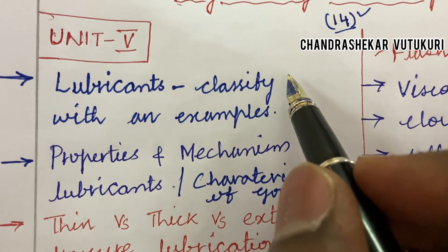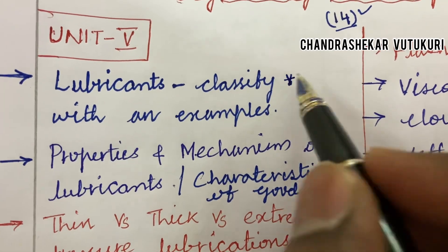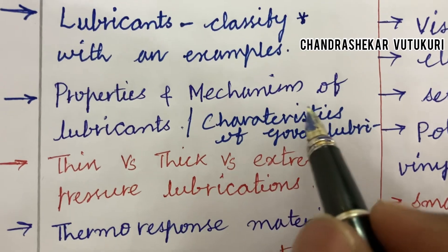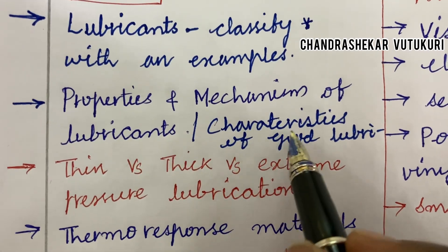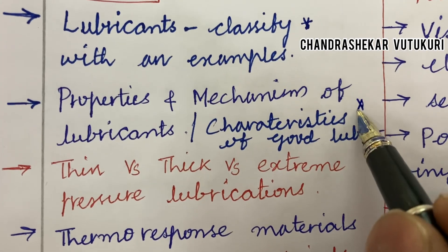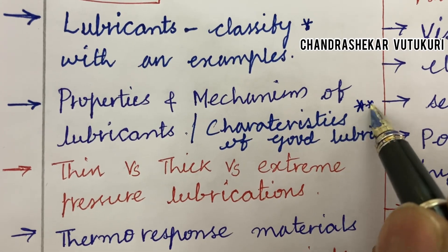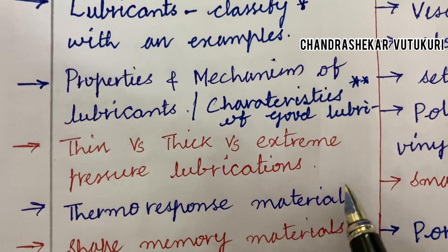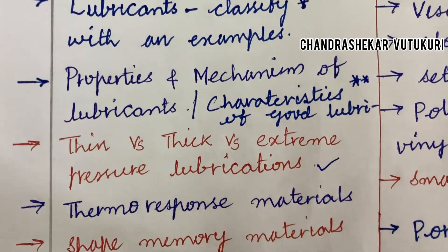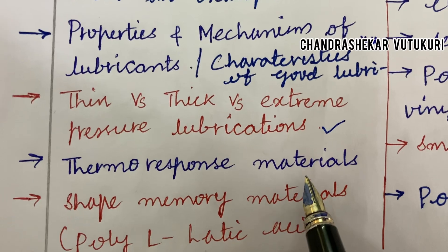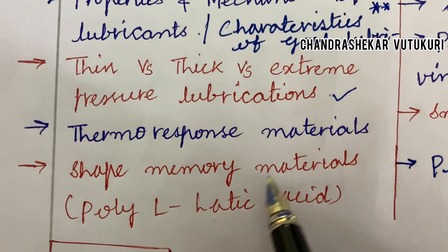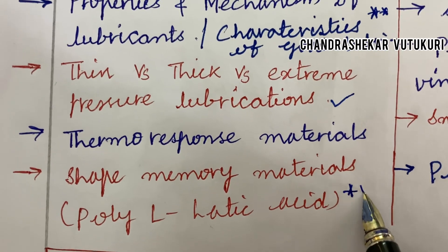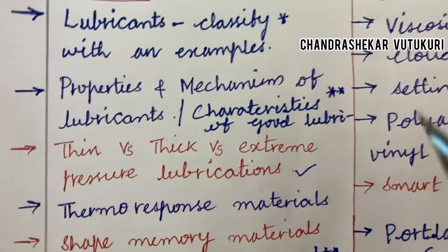Lubricants and their classifications with examples is said to be a topmost question. The properties and mechanism of lubricants, and the characteristics of good lubricants, may also be one of the highlighted questions. Thin versus thick versus extreme pressure lubrications, their differences, thermoresponsive materials, and shape memory materials related to polylactic acid are also said to be topmost questions.